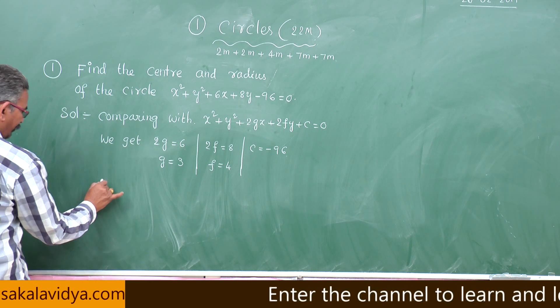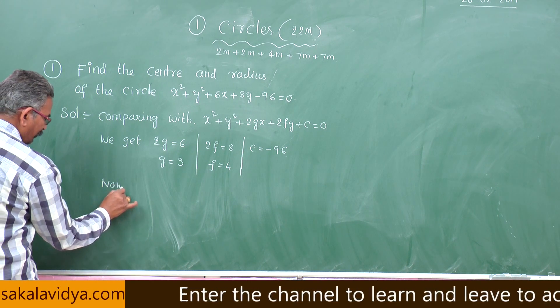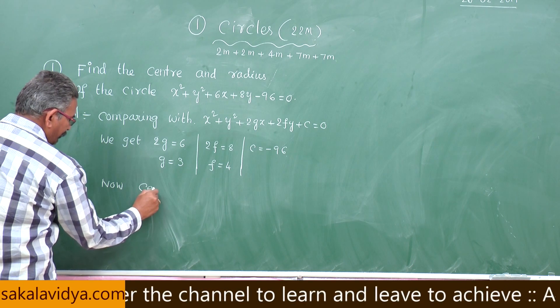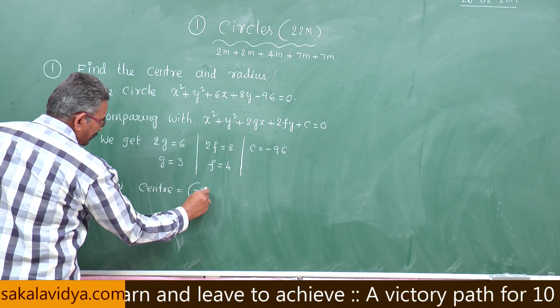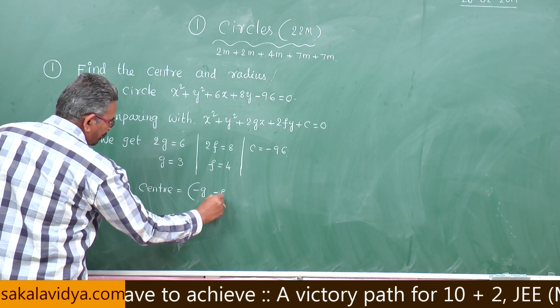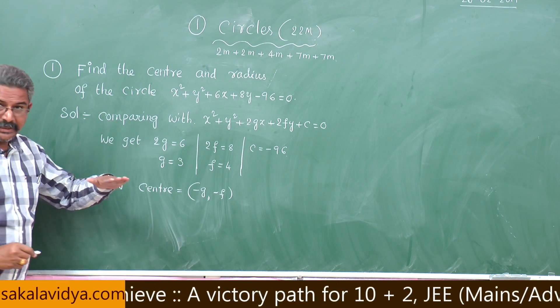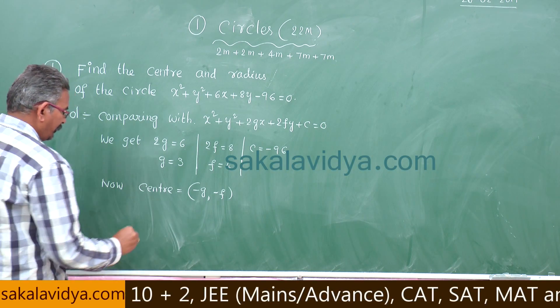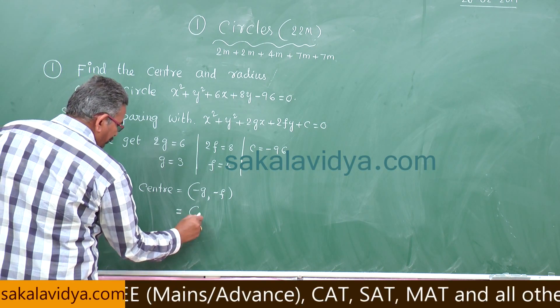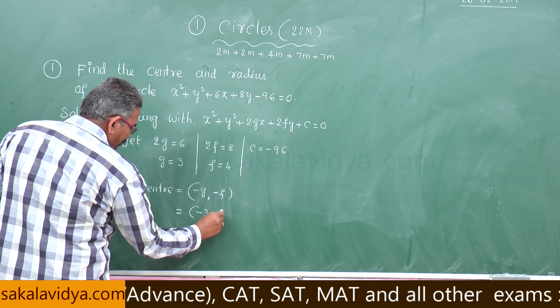Now let us recall the formula to find out center. Center of the circle is given by minus g comma minus f. This has to be remembered. This way we have to recall in the examination hall. This is minus 3 comma minus 4.